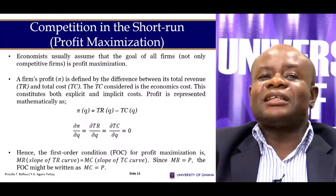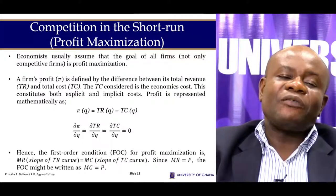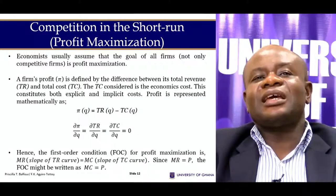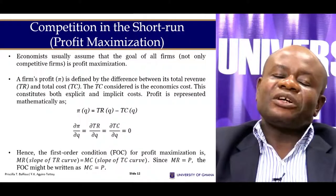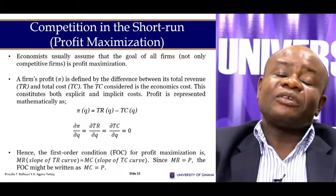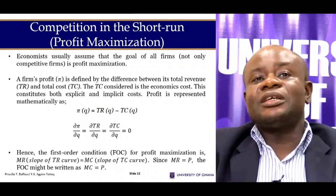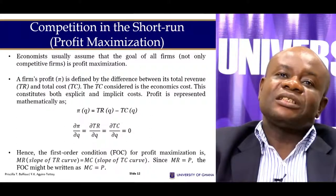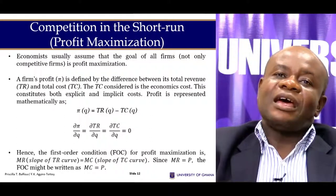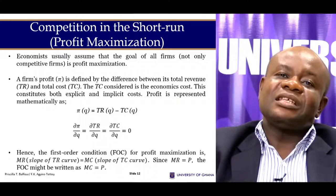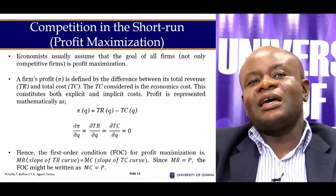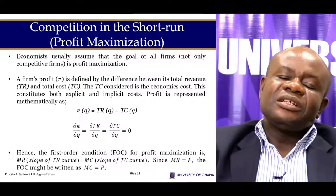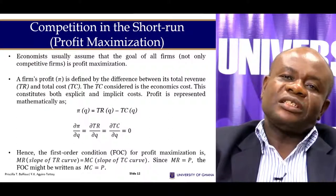If I want to maximise profit, I have to take the first-order condition of the profit function with respect to output and equate it to zero. So the first derivative of the profit function with respect to output gives us dTR/dQ minus dTC/dQ, and that must be equal to zero. Taking dTC/dQ to the other side, the first-order condition is dTR/dQ equals dTC/dQ.